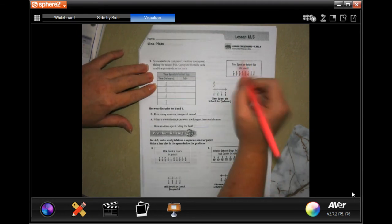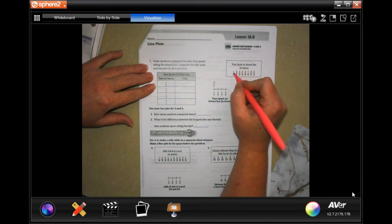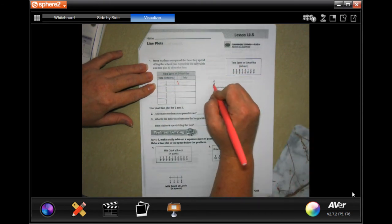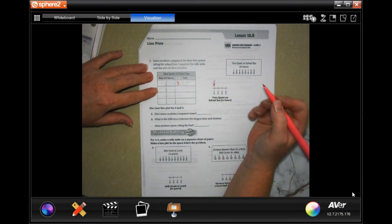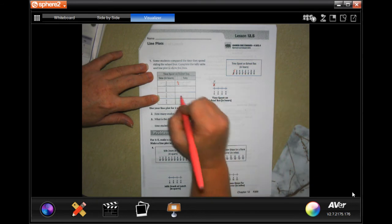Okay, so one-sixth, I'm gonna put a tally there and that's one of our X's. I'm gonna cross it off as I go. Three-sixths, three-sixths, tally X.